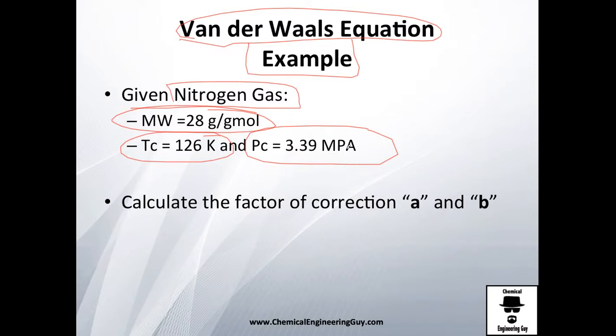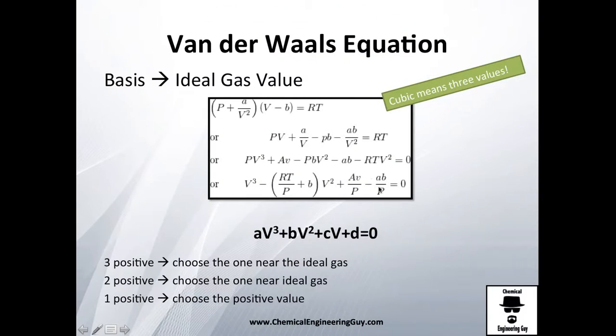As you can see, this is mega Pascals, that means 3.39 times 10 to the 6 Pascals. They tell you first calculate the factor of correction A and B, which if you remember, are these guys here and here.